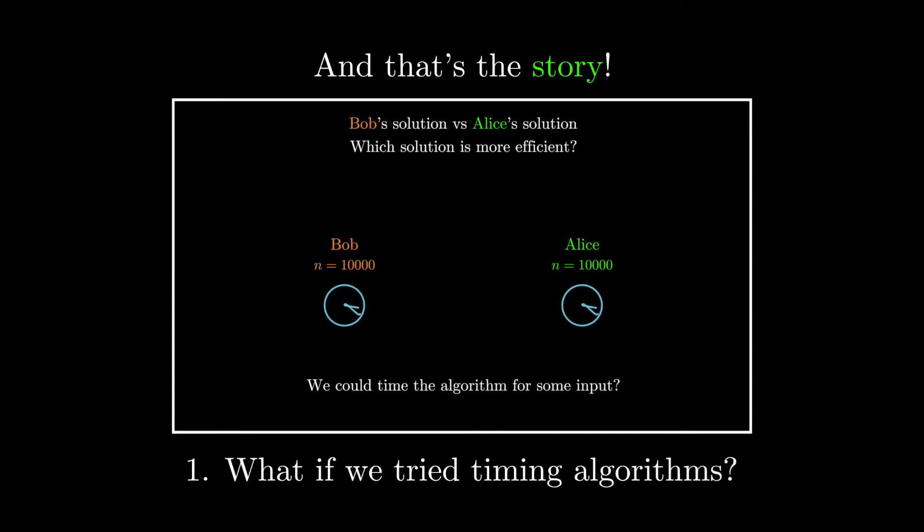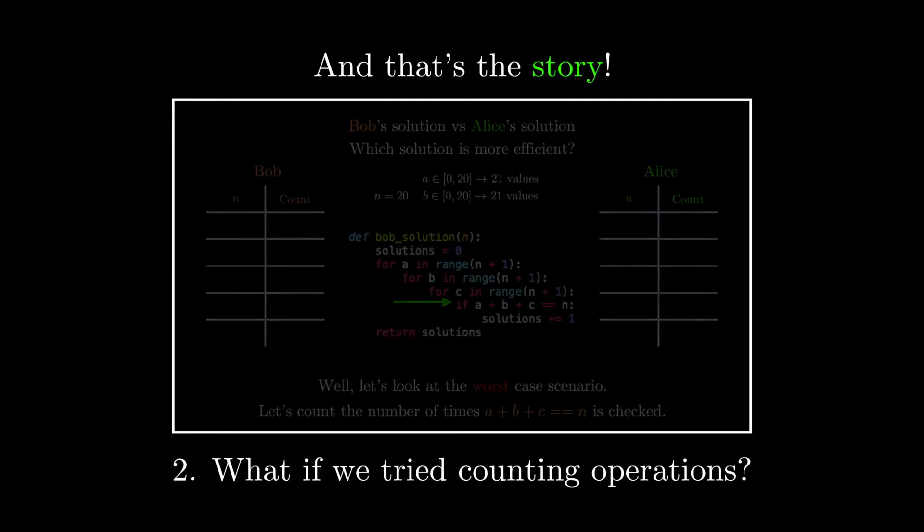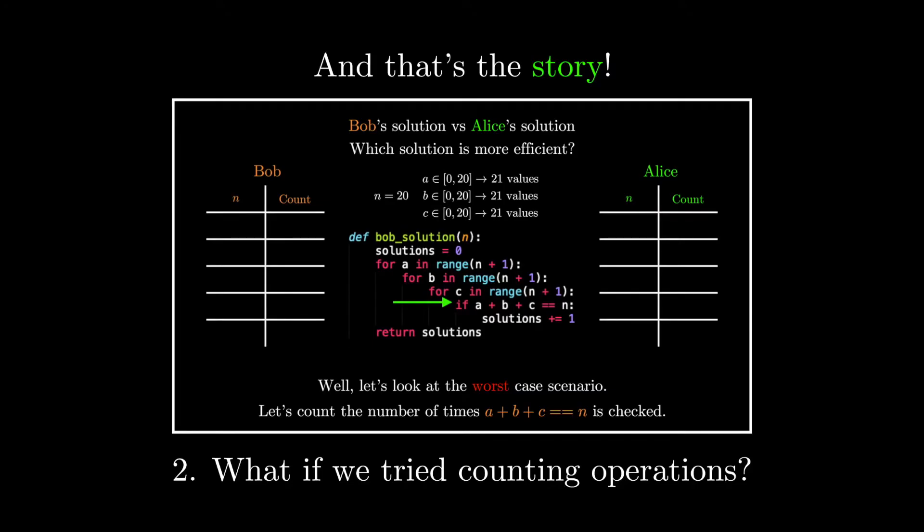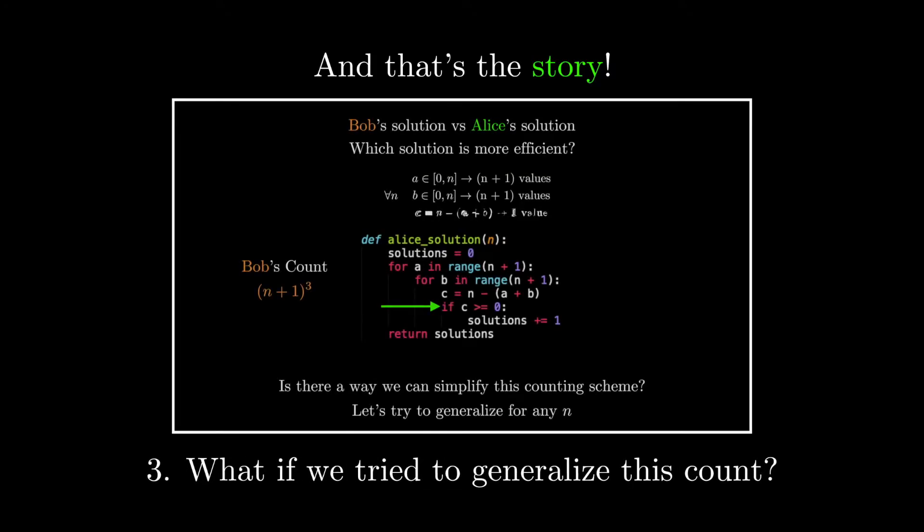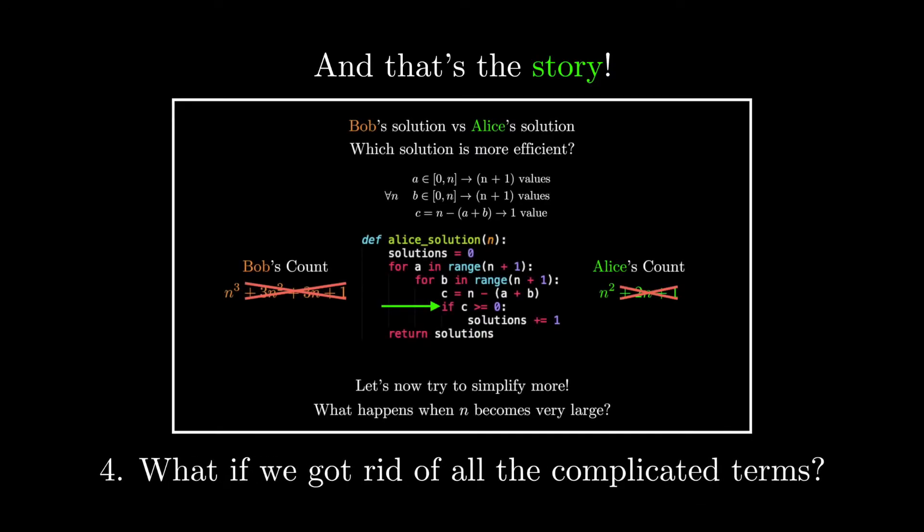And this is the story of Big O notation that no one really tells you about. But the biggest takeaways here is that we tried many different measurement ideas, all of which had some good features, but also some really annoying features. We slowly took away those annoying features one by one and ended up with something that looked like Big O notation.